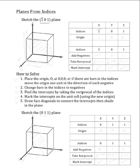The first step in solving this is to choose the origin. Because there is a bar in the indices, we will have to move the origin one unit in the direction of the bar in order to keep the plane within the unit cell. So our new origin will be 1, 0, 0, and that will be located right here in the front corner of the unit cell.